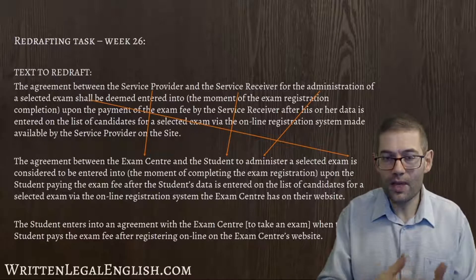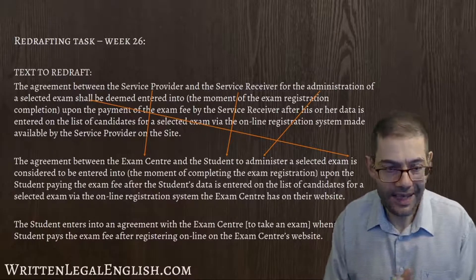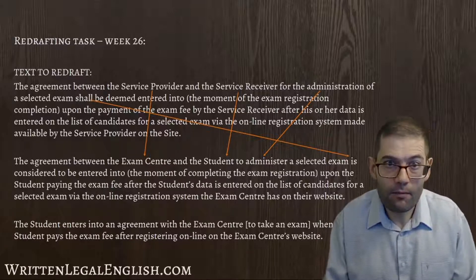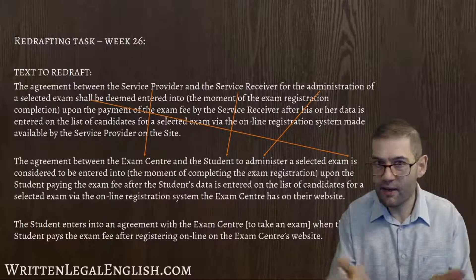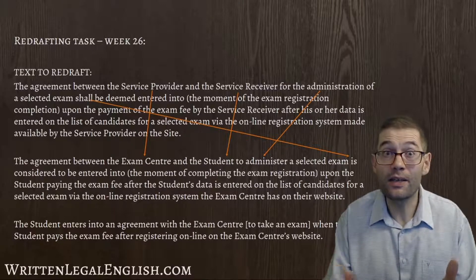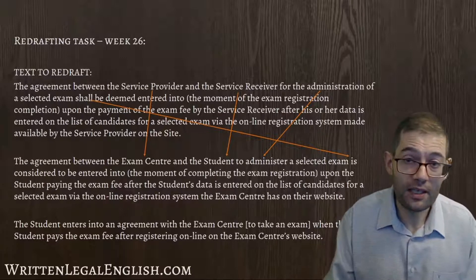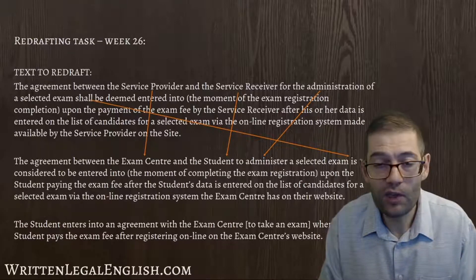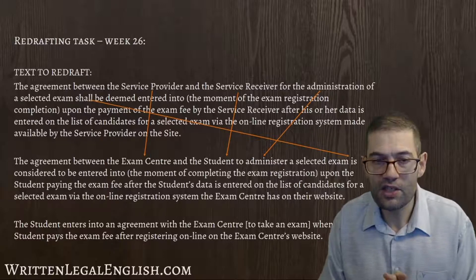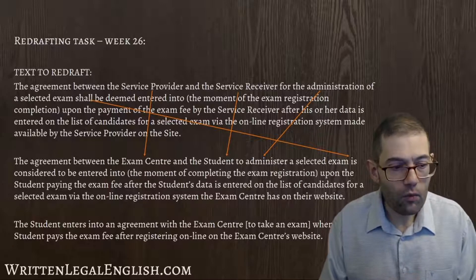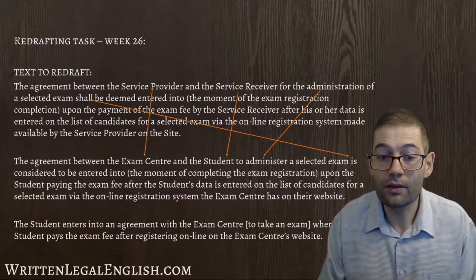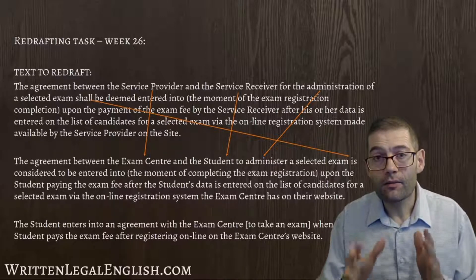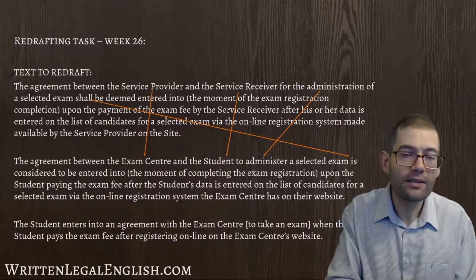This is what I think the message is behind that horrible, complicated text. The student enters into an agreement with the exam centre — and we could say to take an exam, although the context might be clear enough that we don't need to say that. Or it might be a good idea to say which exam: for example, it might be the TOLLES exam, or a business exam, or the advanced certificate in English — what I used to know as the CAE exam. And then to continue: when the student pays the exam fee after registering online on the exam centre's website. That's what I think the message should be in its simplest form.